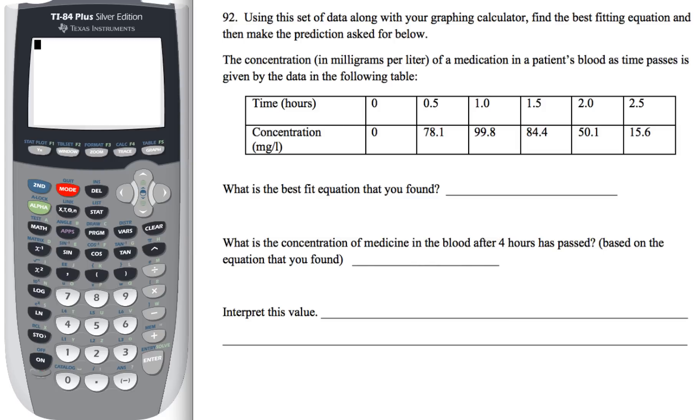We've got some data here that's presented in this table, and it talks about the concentration in milligrams per liter of medication in a patient's blood as time passes. We've got to do three things. First, we've got to figure out a best-fit equation. Second, we've got to figure out the concentration of the blood after four hours. And then lastly, we've got to interpret whatever that number means after four hours has passed.